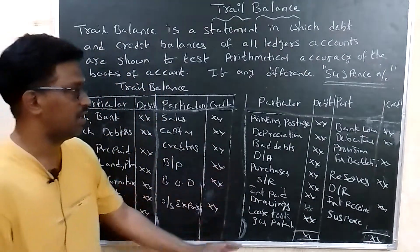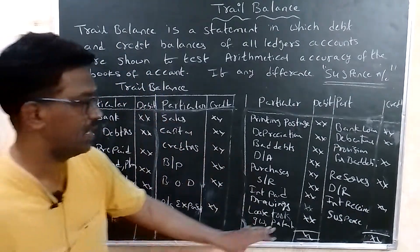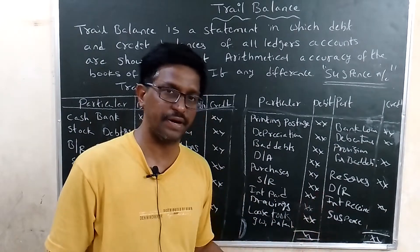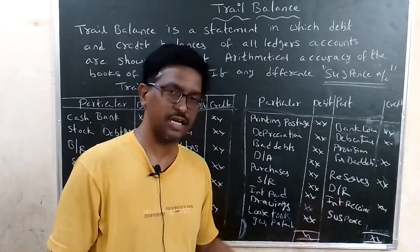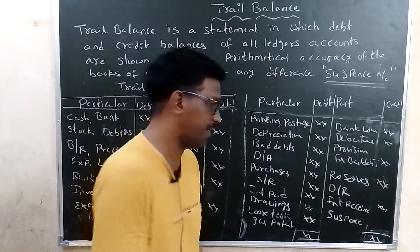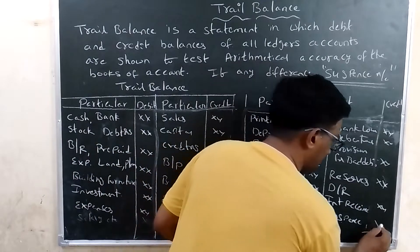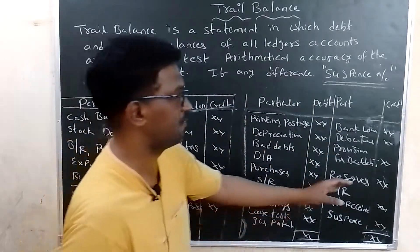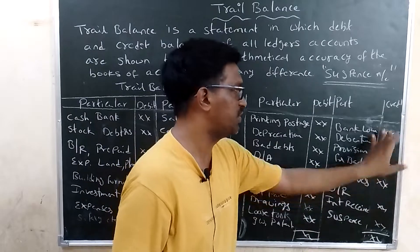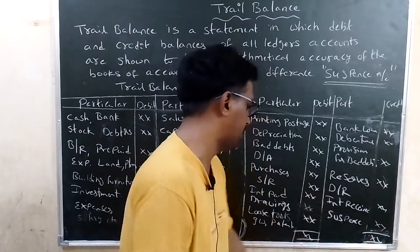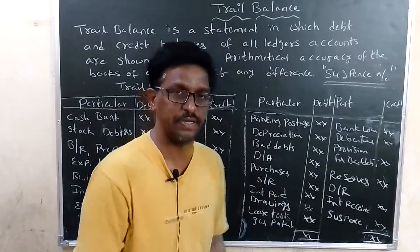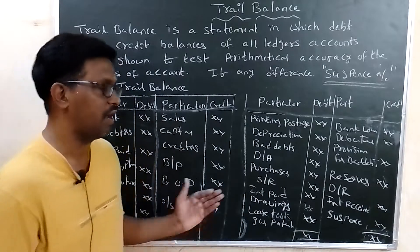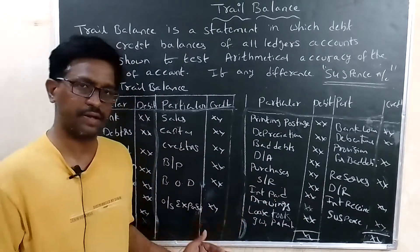The difference of the trial balance is treated as the suspense account. If the credit side is higher, the difference is shown as a suspense account on the debit side. The suspense account may appear either on the debit or credit side.